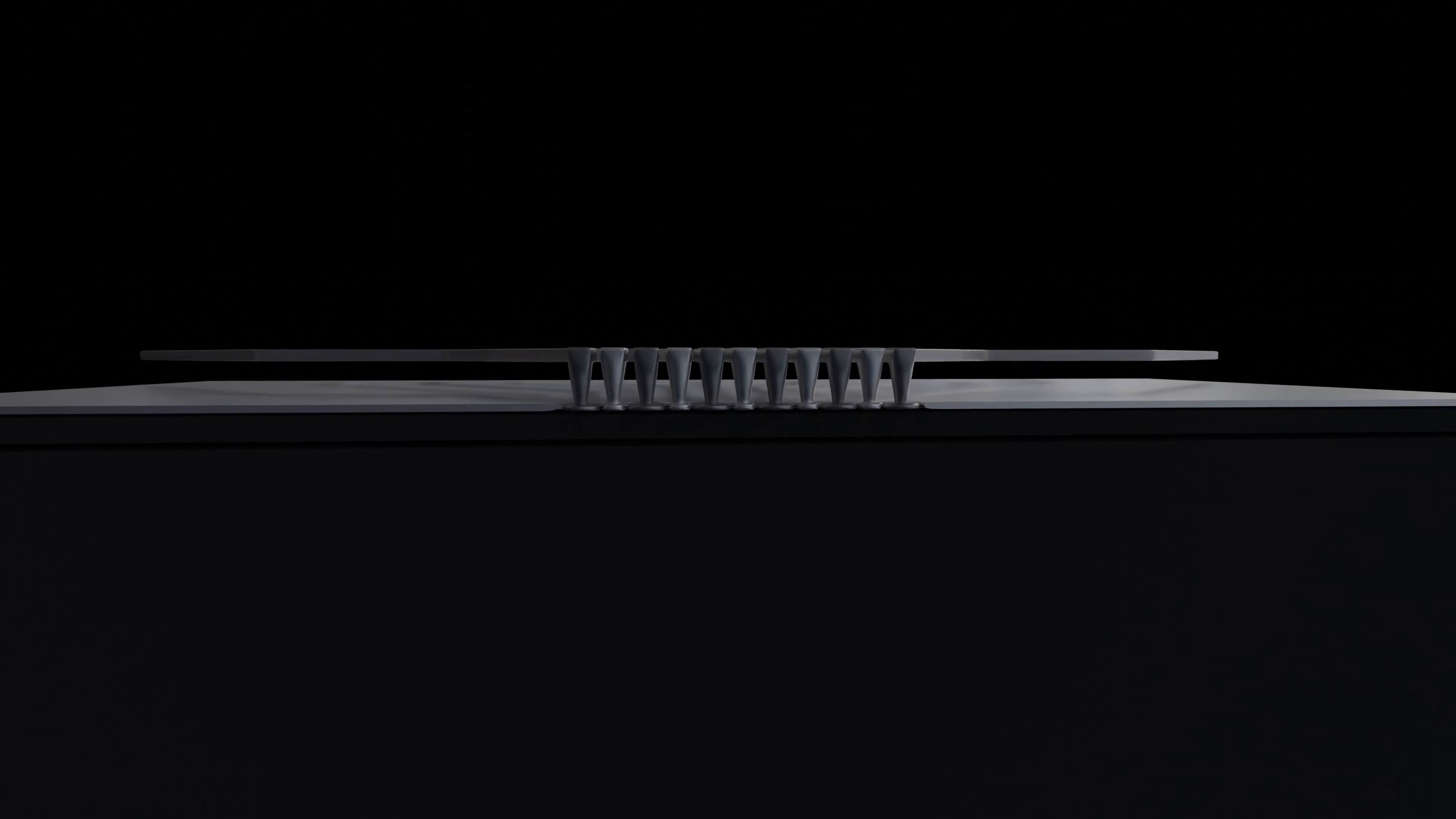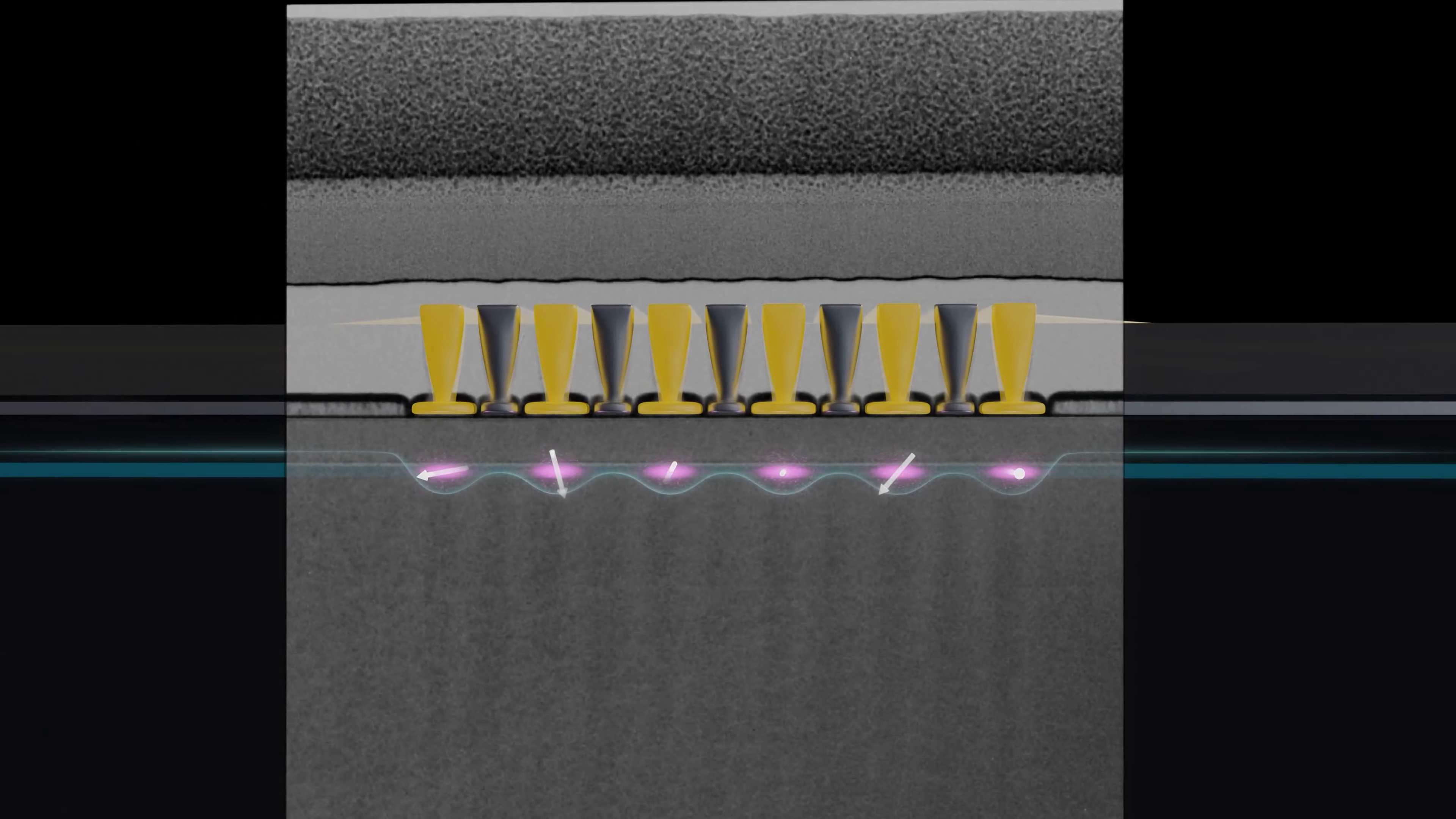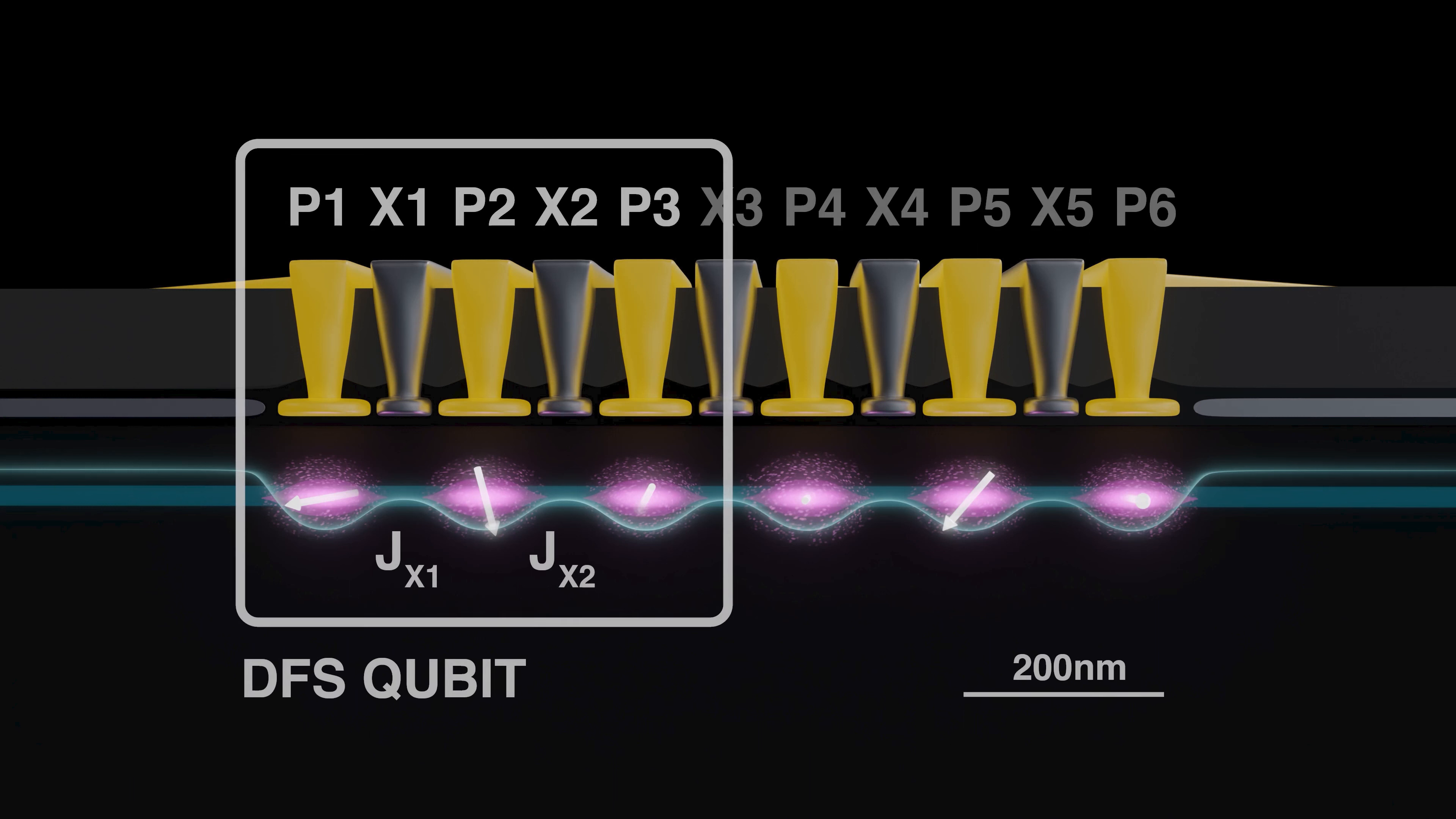The major feature of this result is that we were able to entangle two different encoded qubits. We're not just treating every individual electron as a qubit - we're actually encoding that information into three spins all together, and then to entangle two sets of those three spins we now have to operate in a much larger Hilbert space.